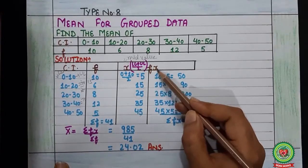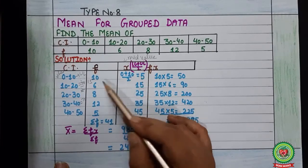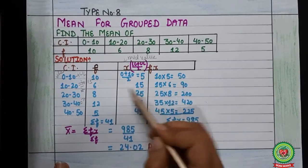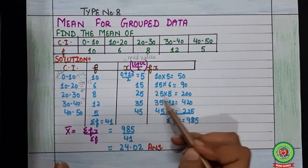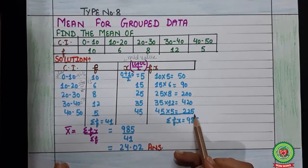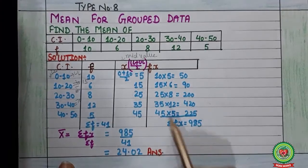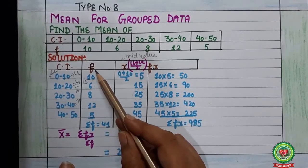Now come to column number 4, that is of fx. fx means multiply f and x. 10 fives are 50, 15 sixes are 90, 25 eights are 200, 35 twelves are 420, 45 fives are 225.